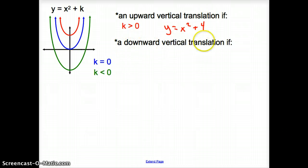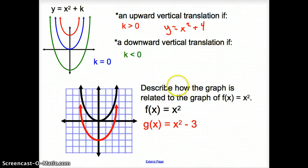Now, a downwards vertical translation, though, if what? If k was less than 0, so if it was a negative number, if we were subtracting 5, subtracting 6, if we had y equals x squared minus 5, we would have this green parabola where it was moved down from the blue parabola.